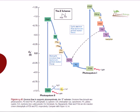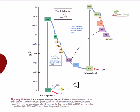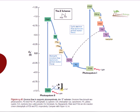In this video we'll be talking about the electron flow in oxygenic photosynthesis, which is also called the Z-scheme photosynthesis. The photosystems of oxygenic photosynthetic organisms like cyanobacteria have two different photosystems: photosystem II and photosystem I.